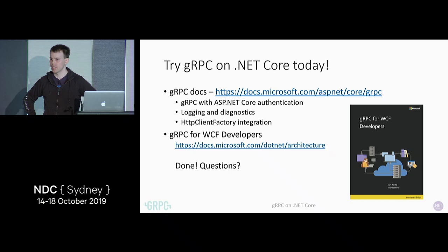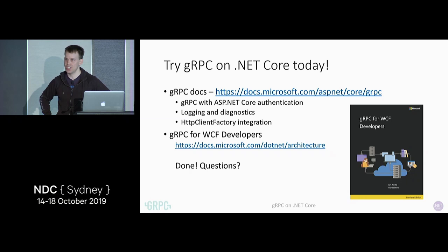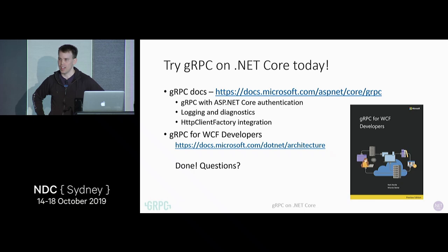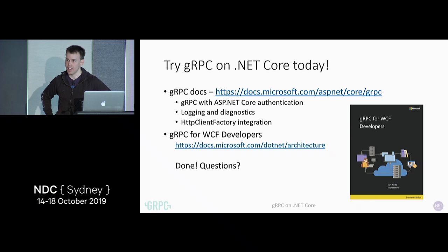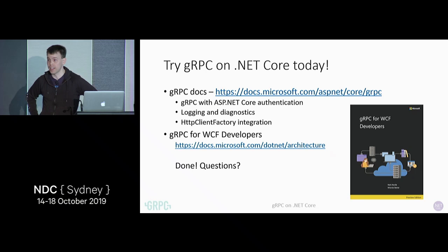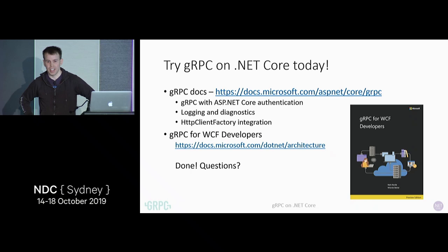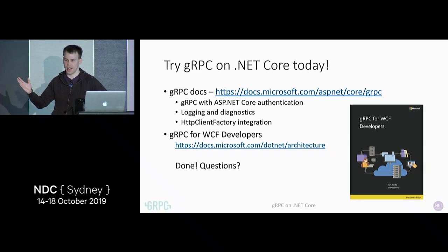On Azure functions and app service: at the moment, gRPC doesn't work in Azure App Service. We talked about the issue with proxies — Azure App Service's proxies don't support the necessary features of HTTP/2. That's something we're working on — hopefully, no promises, but we'll aim for beginning of next year to get gRPC working on Azure App Service. As for Azure Functions — Azure Functions runs on top of App Service, but beyond that I don't know whether they might add built-in support for a gRPC endpoint.